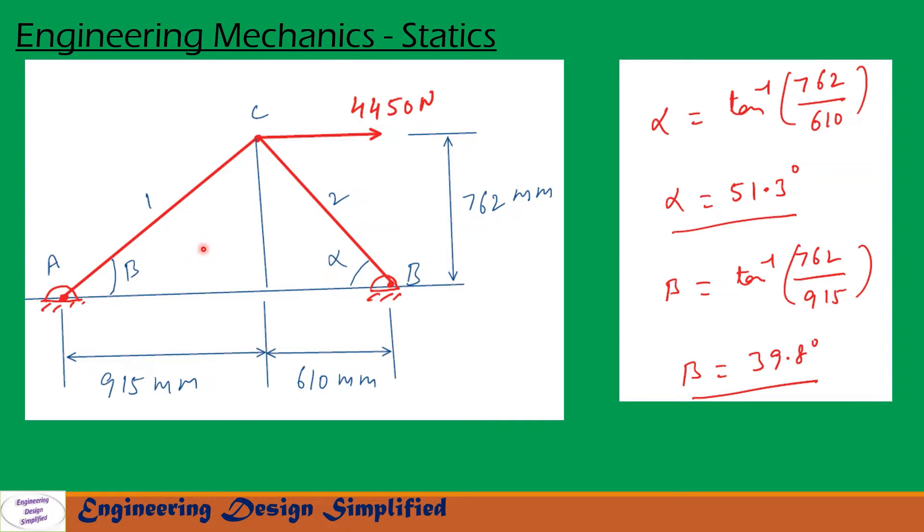From this right angle triangle, tan beta can be written as tan beta equals 762, that is height, divided by 915, that is horizontal distance. So from this, beta is found as beta equals 39.8 degrees.